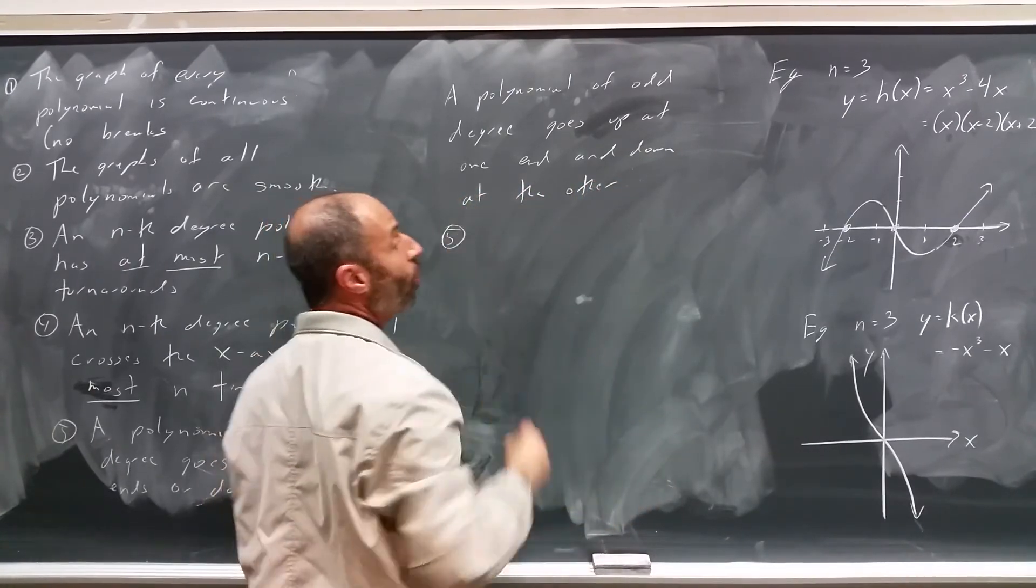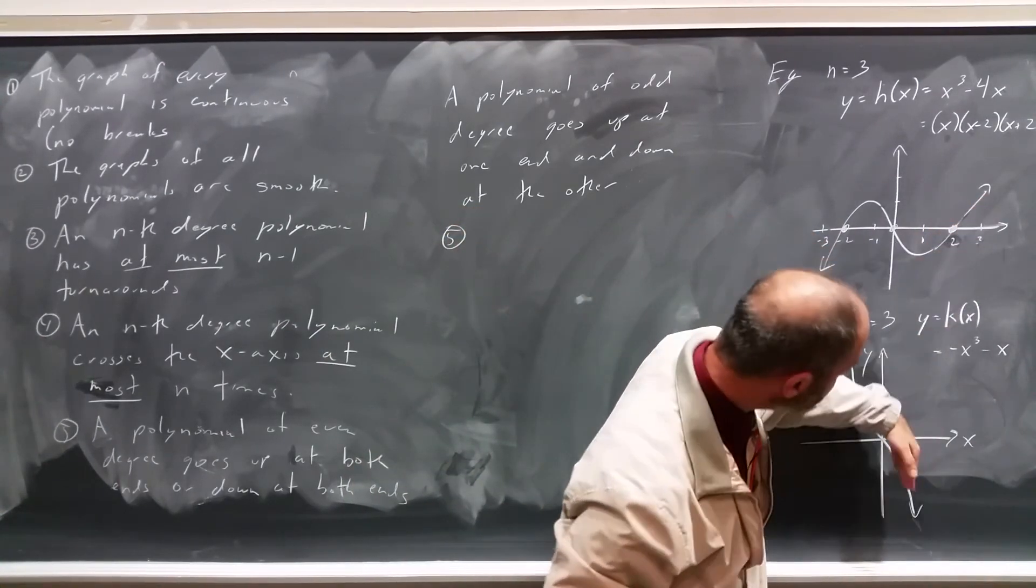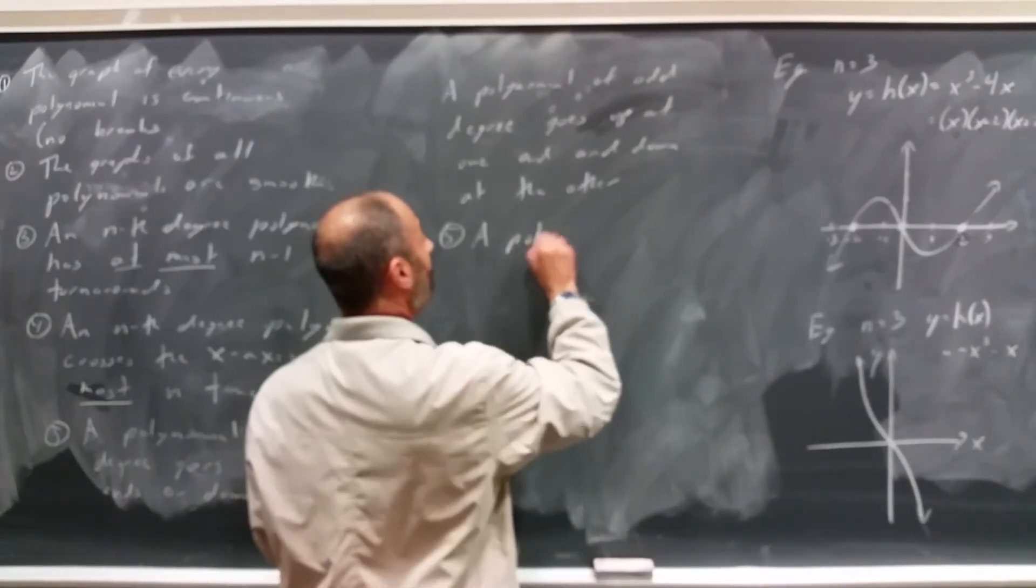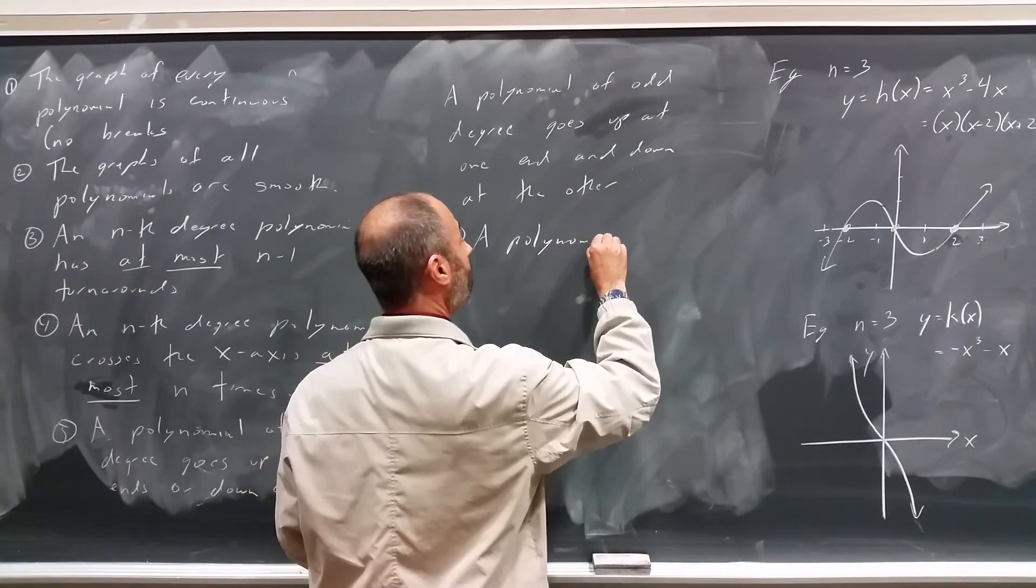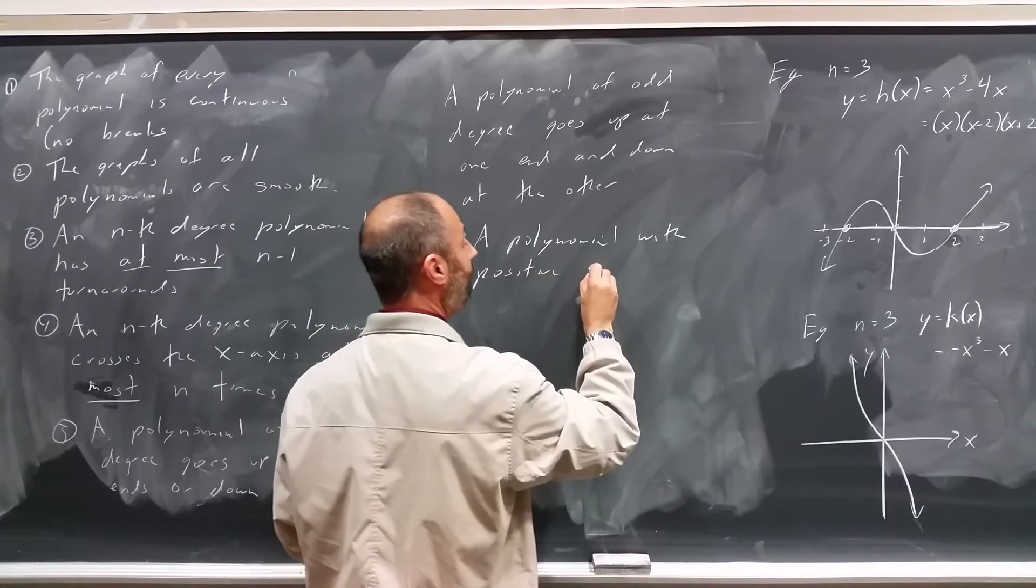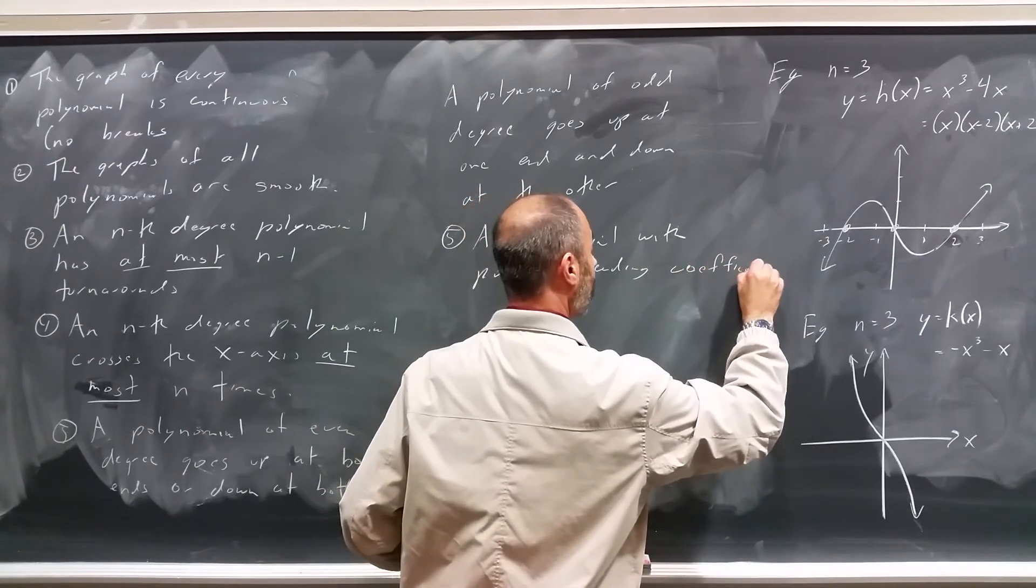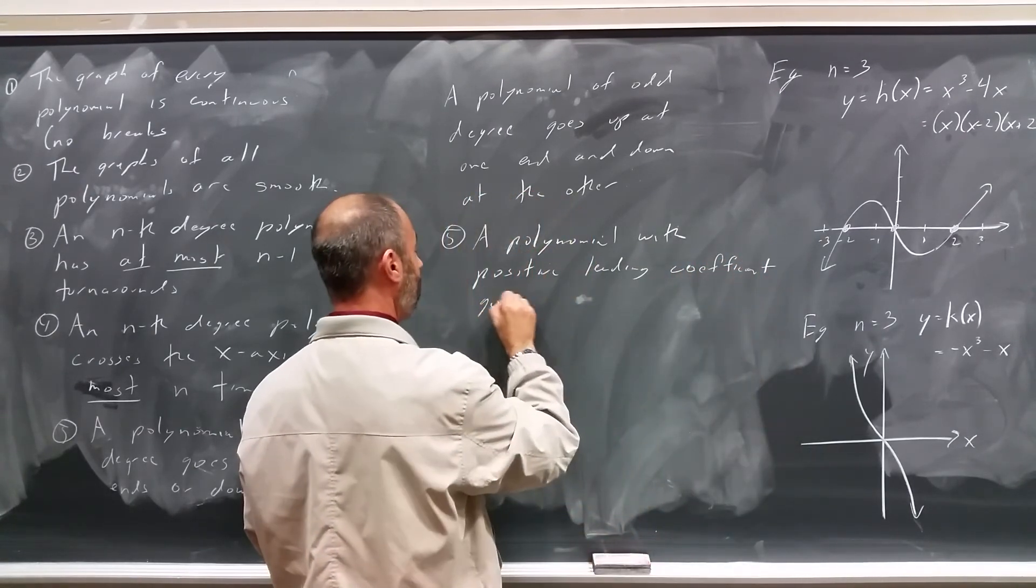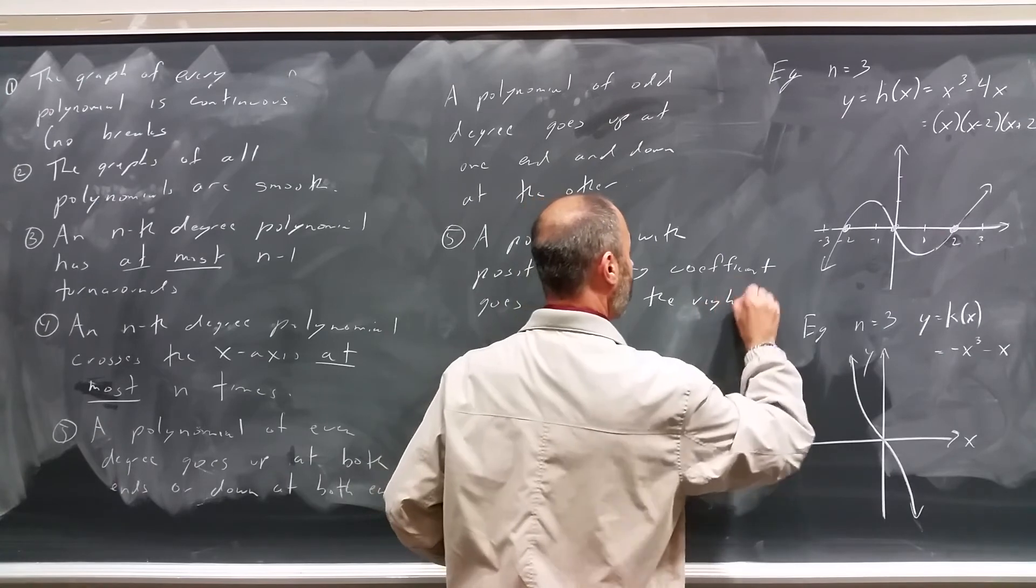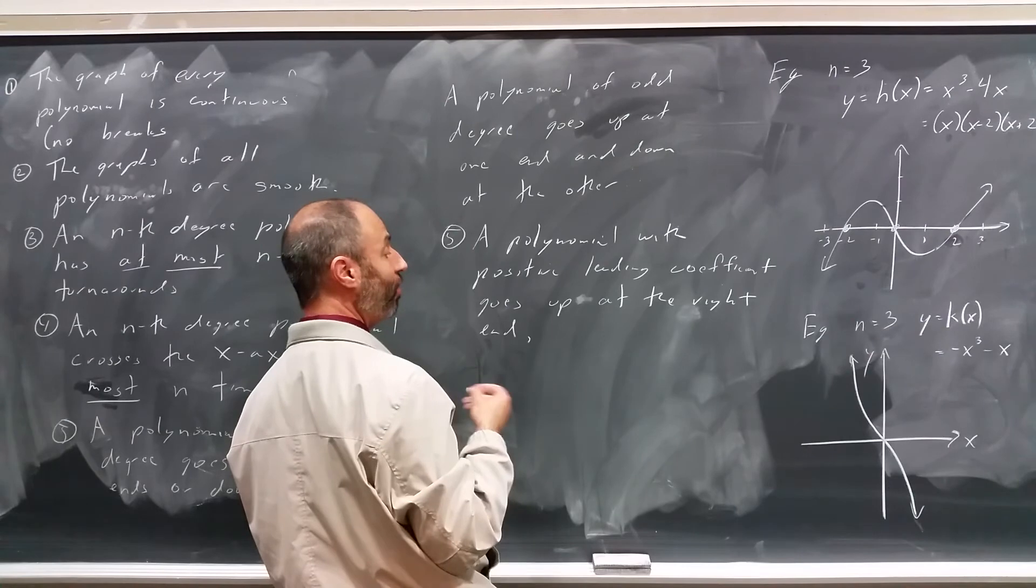And, lastly, we can always tell whether a polynomial goes up to the right or down to the right by taking a look at the sign of its leading coefficient. A polynomial with positive leading coefficient goes up at the right end. Well, the polynomial with negative leading coefficient goes down at the right end.